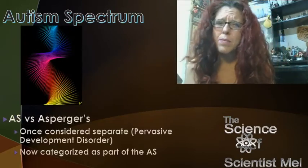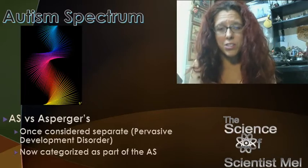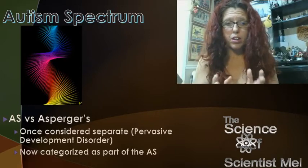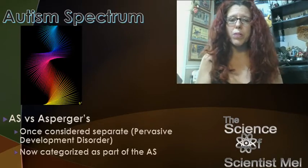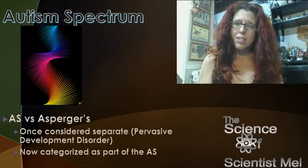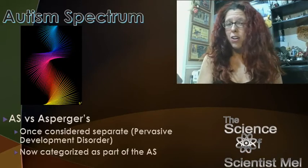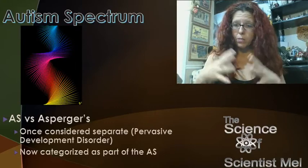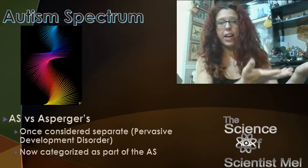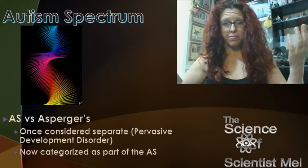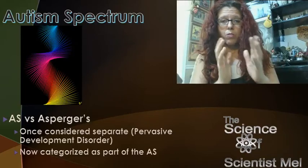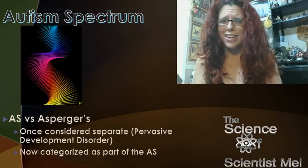Autism spectrum versus Asperger's: they used to be categorized differently. Asperger's was once considered a pervasive developmental disorder, not part of the autism spectrum. Now it's been recategorized as part of the spectrum. Science grows and we learn things, so sometimes we have to shift categories around because we have a better understanding. And that's a good thing.